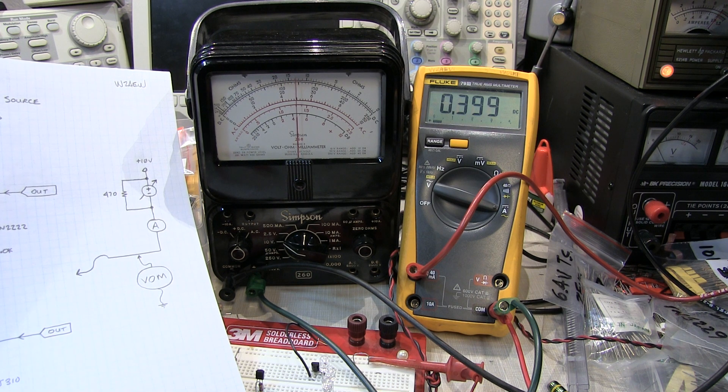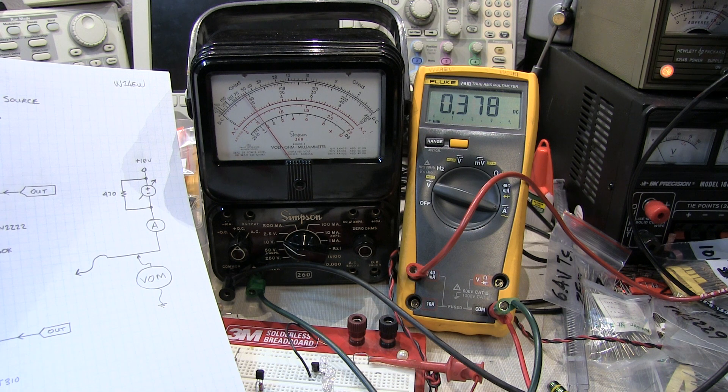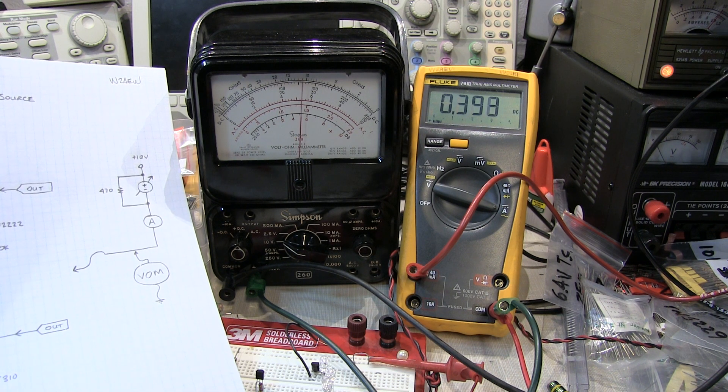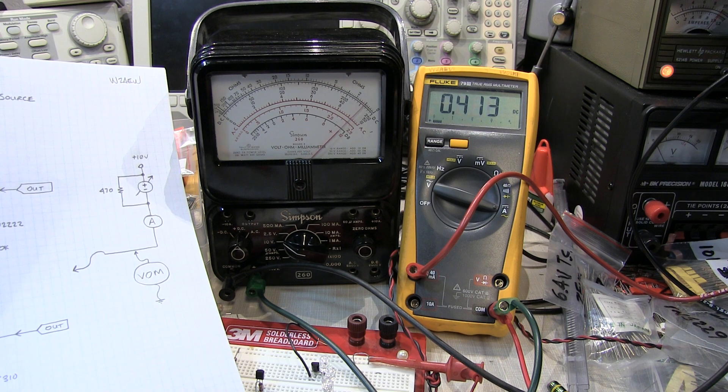And as I vary that voltage, say down to about 5 volts there, we drop to 394. Down to about 2 volts, right about here, about 378. So those are the numbers that we used to calculate the output impedance.